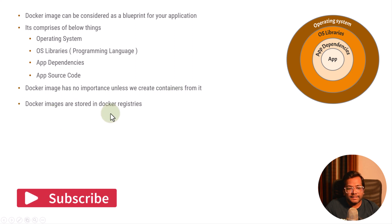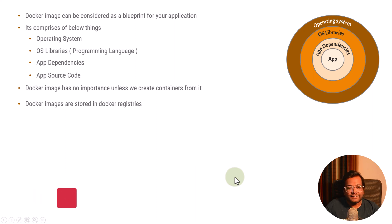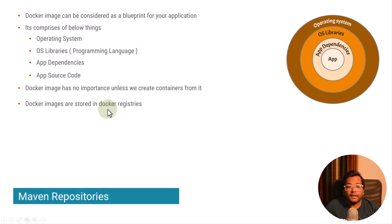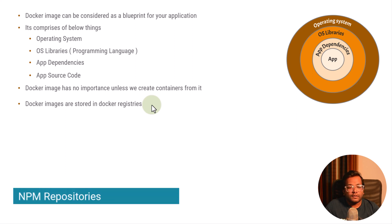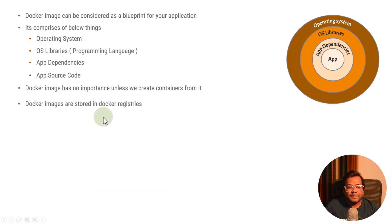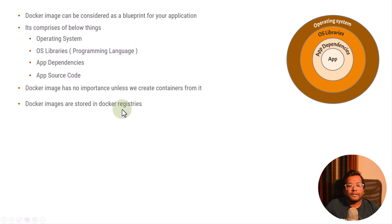Docker images are stored in Docker registries. In the Docker ecosystem we have Docker registries which host the Docker images. For example, if you are using Java, there are jar files which are stored in Maven repositories — Docker registries are something like that. If you are using Node.js, we have npm. So there is a similarity between npm or Maven repositories and Docker registries, and Docker images are stored in these Docker registries.